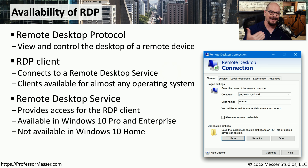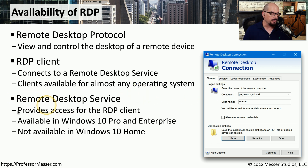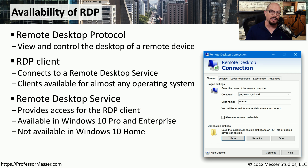For someone to connect to your device across the network, your machine needs to be running the Remote Desktop Service. This allows the remote technician running the RDP client to connect, authenticate, and gain access to the desktop. The ability to allow anyone to connect at any time using the Remote Desktop Service is not available in Windows 10 Home, but Windows 10 Home does include remote assistance capabilities, which allows the user to temporarily enable someone to connect to their local machine.